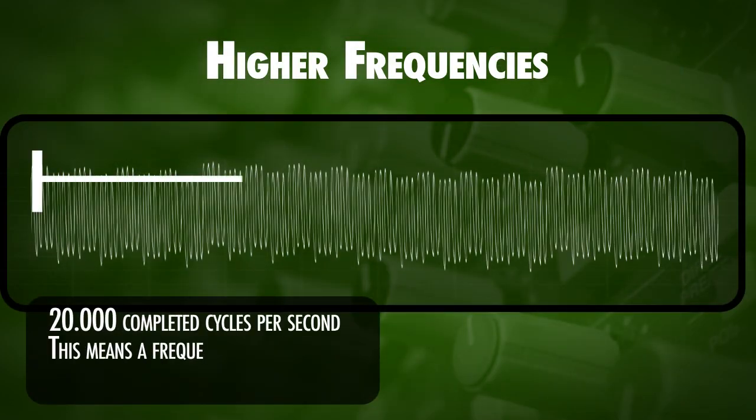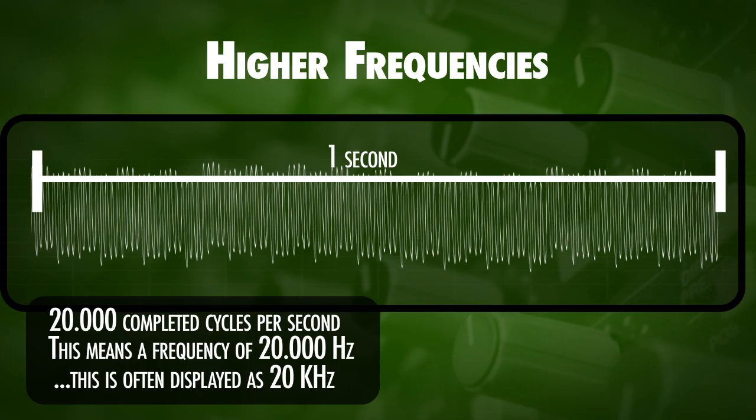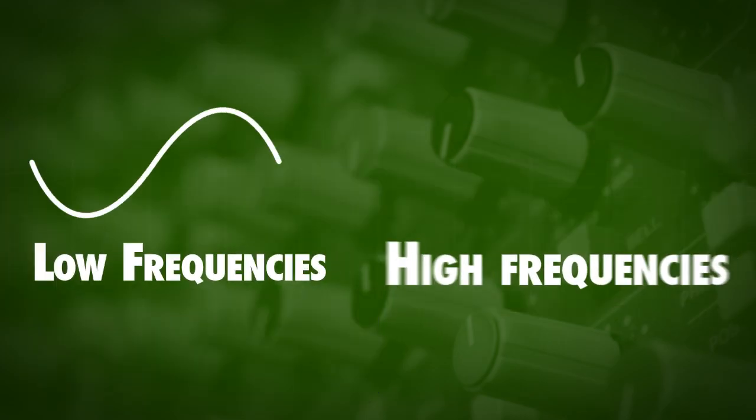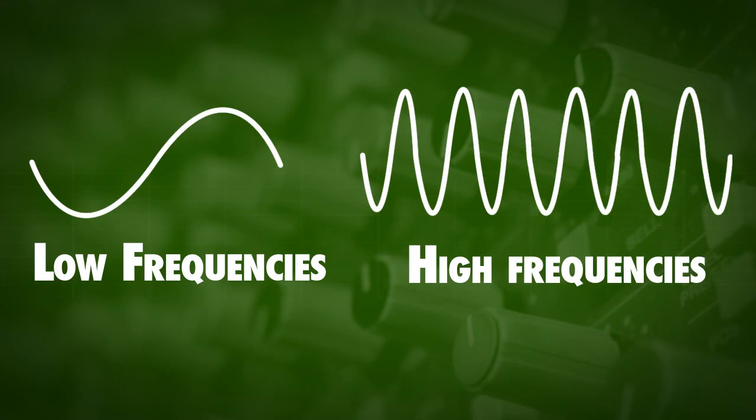Higher frequencies can go up to 20,000 completed cycles per second or 20,000 Hertz, which we call 20 kilohertz. We can divide our groups of frequencies simply in two groups: low frequencies and high frequencies. Low frequencies are called bass and high frequencies are called treble.